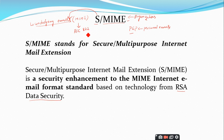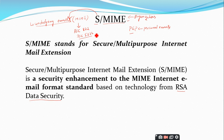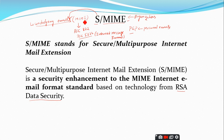RFC 822 is a very old email format but is still in use. The most recent version is RFC 5322, which specifies the internet message format. So, to understand S/MIME you need MIME, and to understand MIME you need the traditional email format — RFC 822 and RFC 5322.